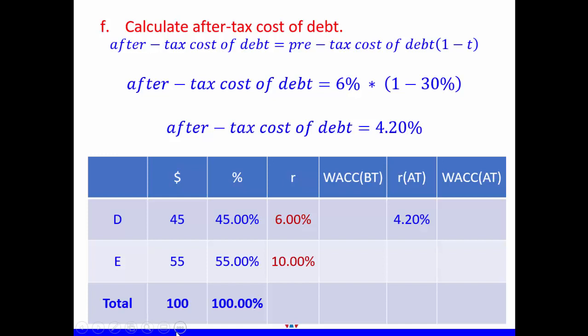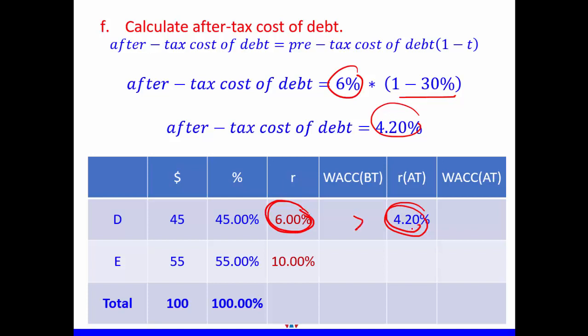Next, we calculate the after-tax cost of debt. We take the before-tax cost of debt, which is 6%, and multiply it by (1 minus tax rate), which is 1 minus 30%. This gives us an after-tax cost of debt of 4.2%. The before-tax cost of debt is always larger than the after-tax cost of debt because we multiply by (1 − T). They would only be equal if there are no taxes, which is not realistic.